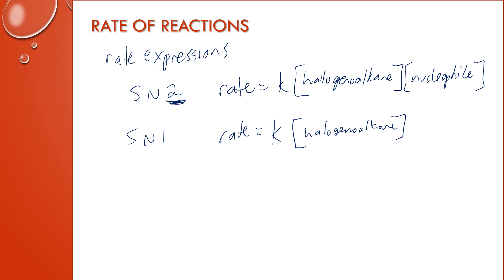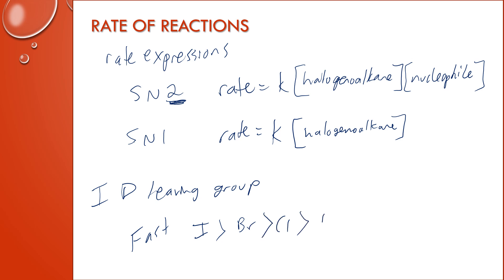The rate is also affected by the identity of the leaving group. The fastest reactions are going to involve iodine, followed by bromine, then chlorine, then fluorine. The reason for this is that the bond between carbon and the halogen has different bond enthalpies, which you can find in section 12 of your data booklet. The easier it is to break that bond, the better leaving group it is, and the faster your reaction can happen.